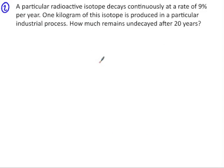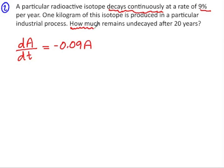Next we have a situation involving continuous decay. So this radioactive isotope decays continuously at a rate of 9% per year. So dA/dt, the rate at which the amount is decaying, and because it's decay and not increase, it's negative 0.09A. We're given some information that one kilogram is produced in a particular industrial process, so how much remains undecayed after 20 years. So now we're looking for the amount, not the rate, which means we need to anti-differentiate.